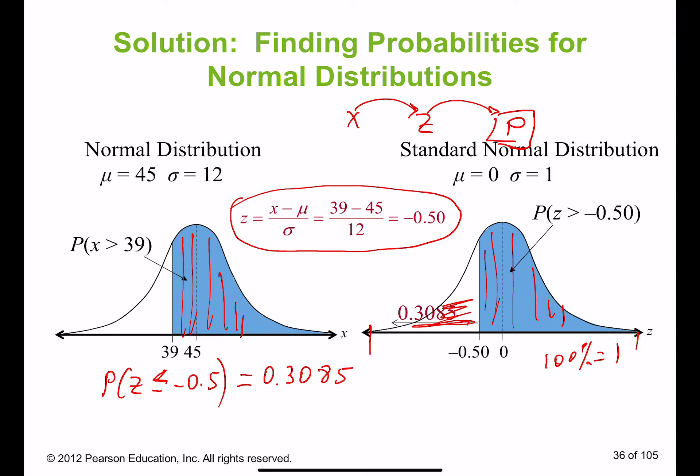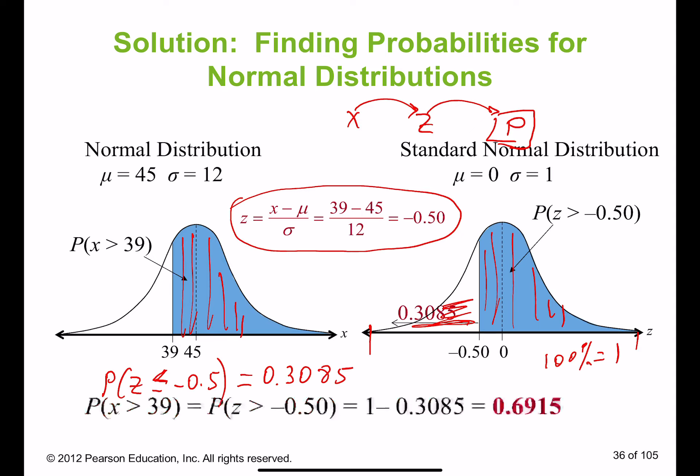So: 1 − 0.3085 = 0.6915, which means 69.15 percent. There is a 69 percent chance that people will stay in the store for more than 39 minutes. It's less than 50/50 certainty but still quite a sizeable portion of shoppers.